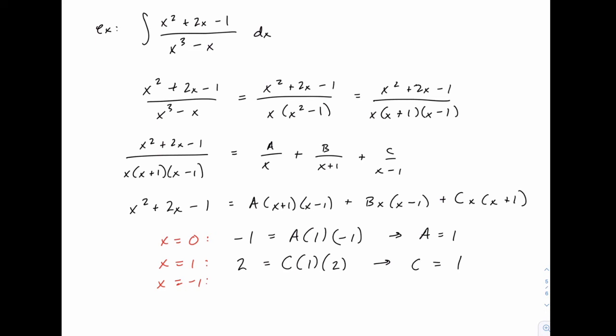And lastly, when we plug in negative 1, the left side gives us 1 minus 2 minus 1, which is negative 2. On the right side, anything that has an x plus 1 in it will disappear, meaning the first and last terms. So all that's left on the right side is B times negative 1 times negative 2. So negative 2 equals 2B, or B equals negative 1.